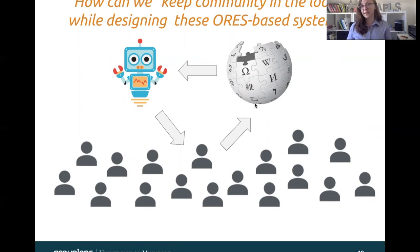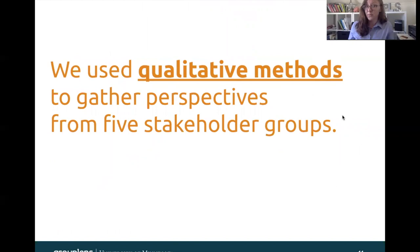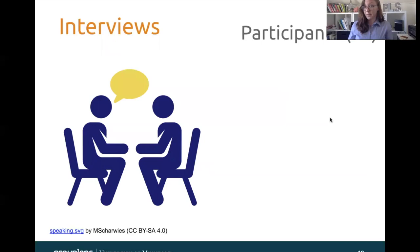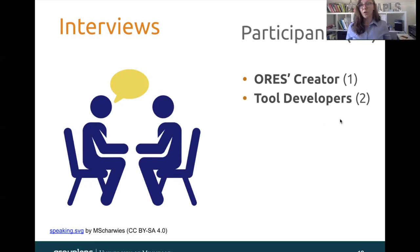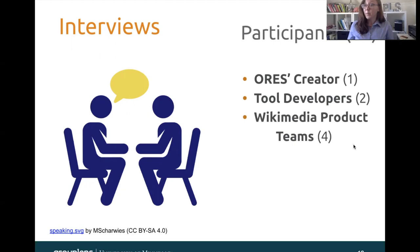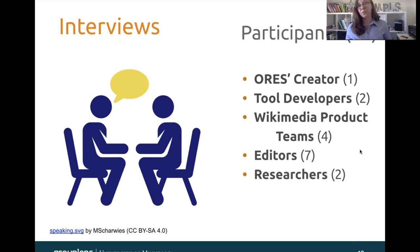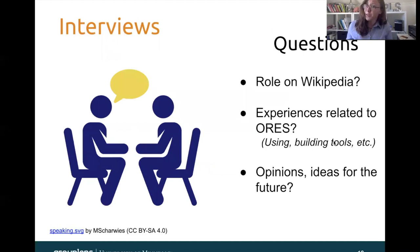We used qualitative methods to gather perspectives from five stakeholder groups. Specifically, we conducted semi-structured interviews with 16 participants, including the creator of ORS himself, two tool developers who are building open source tools that call ORS, four members of the Wikimedia product teams, seven editors, as well as two researchers who also use ORS regularly in their research on Wikipedia. We asked questions like: what's your role on Wikipedia? What types of experiences do you have related to ORS — for example, using ORS as a patroller, or building tools that call ORS, or even being impacted by ORS as an editor yourself? We also asked about people's opinions and ideas for the future development of ORS and ORS-related systems.